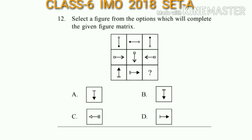Question number 12: Select a figure from the options which will complete the given figure matrix. Looking at the figure matrix, in the first row and second row the figures are moving 90 degrees clockwise. In the same way, in the third row the third figure will be option B.